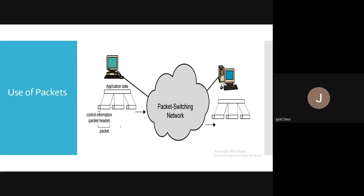As already discussed, there are seven layers: application layer, presentation layer, session layer, network layer, transport layer, data link layer, and physical layer. Always the user interacts with the application layer — always the user gives the data to the application layer. All the remaining layers work internally.